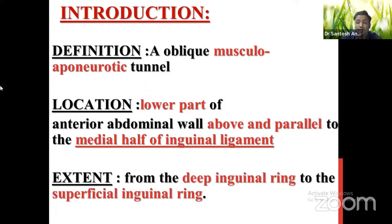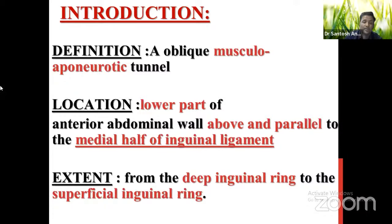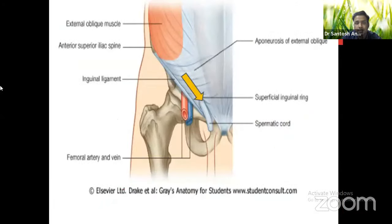The inguinal canal extends from the deep inguinal ring to the superficial inguinal ring. It is neither horizontal nor vertical — it is an oblique musculo-aponeurotic tunnel. The yellow arrow shows the location of the inguinal canal, and the green arrow shows the inguinal ligament. It runs above and parallel to the middle half of the inguinal ligament.